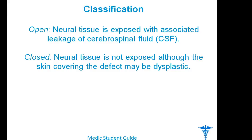Neural tube defects can be open or closed. The open type frequently involves the entire central nervous system and neural tissue is exposed with associated leakage of cerebrospinal fluid. The closed type is localized and confined to the spine, with the brain rarely affected and neural tissue not exposed, although the skin covering the defect may be dysplastic.